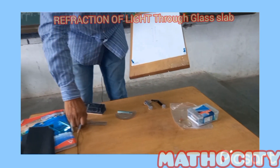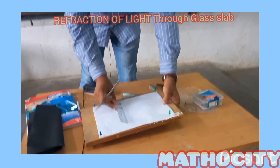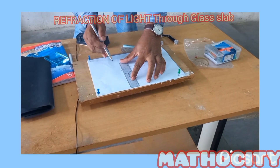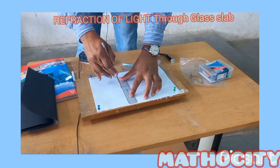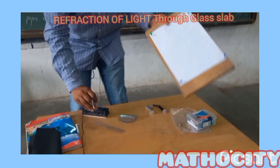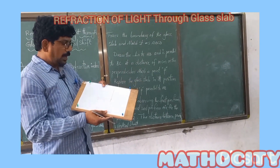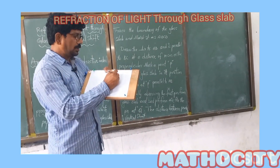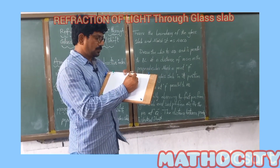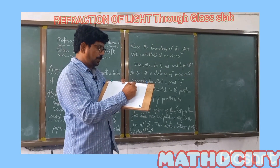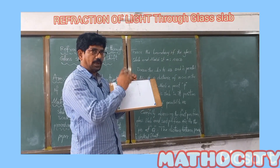At side BC, I am drawing a perpendicular to AB. I marked a point P on the perpendicular drawn to AB.